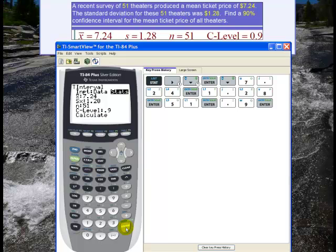And I enter to hit calculate. And there's the confidence interval for the population mean. It goes from 6.9396 to 7.5404. Since we're talking about money, let's round to two decimal places, or 6.94 to 7.54.